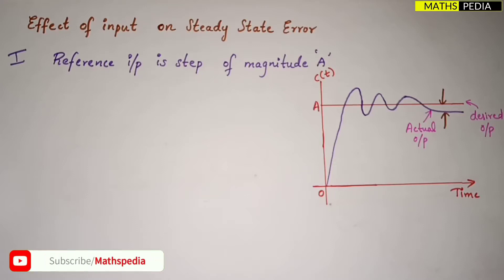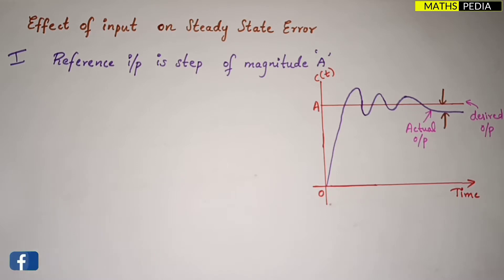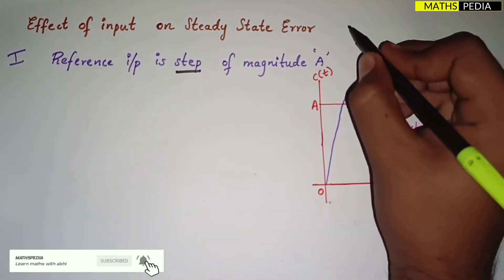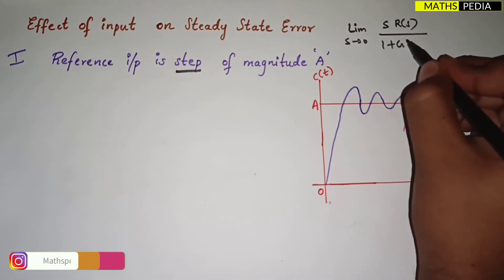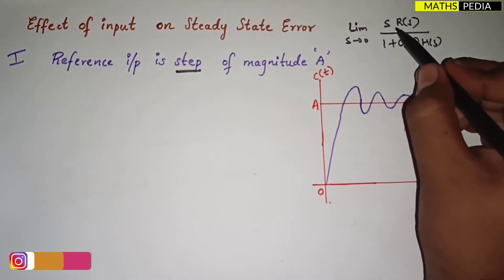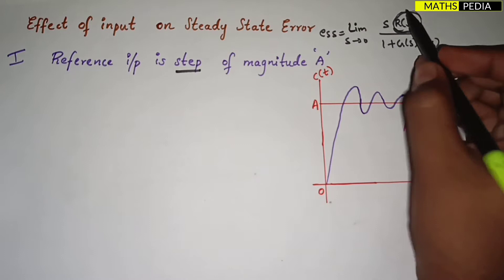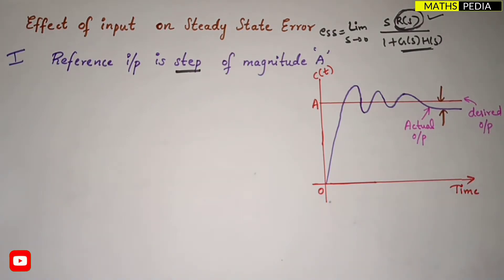In this video we are going to learn the effects of input - whether it is type and magnitude - and how it affects the steady state error using the static error coefficient method. We are taking different types of reference input: first one is step, then ramp, then parabolic. The steady state error depends upon the reference input as well as the open loop transfer function, and we are focusing on the reference input in this video.